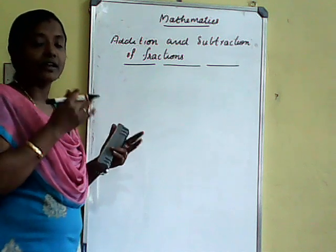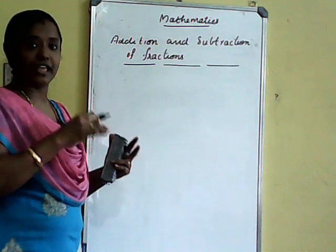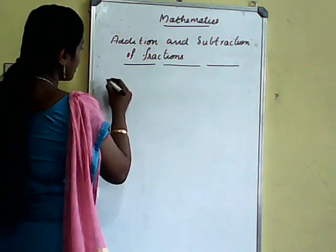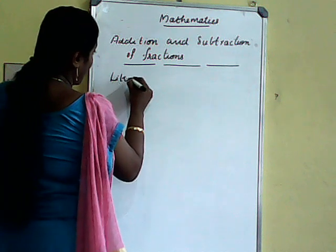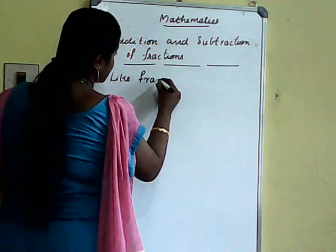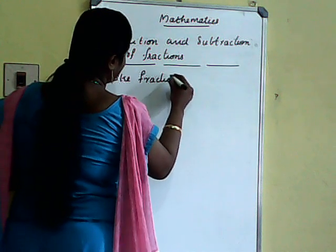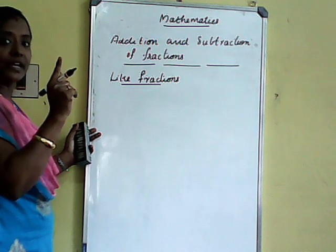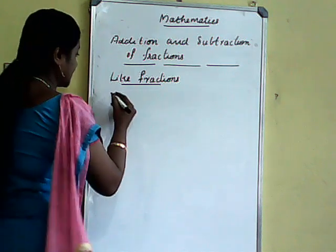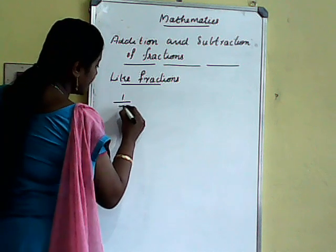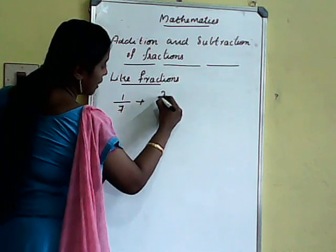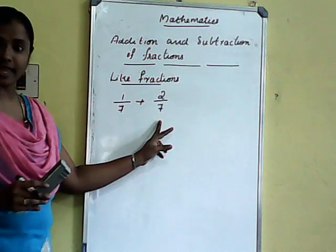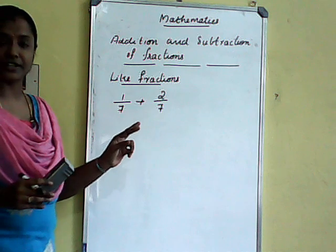So how to add and subtract like fractions and unlike fractions? Let us move to this one. First, about like fractions. Like fractions means denominators are same. Take one example: 1 by 7 plus 2 by 7. Here, denominators are same, so it is a like fraction.